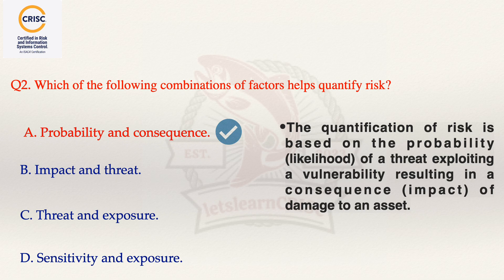Let's discuss the other options. Moving to option B, that is impact and threat. This option is incorrect because a threat is anything — for example, an object, substance, or human — that is capable of acting against an asset in a manner that can result in harm. The impact is the effect of the threat on the asset. Threat and impact are not sufficient to quantify the risk.